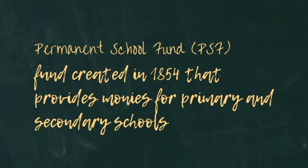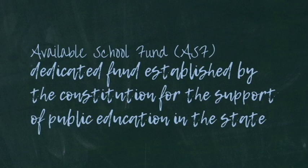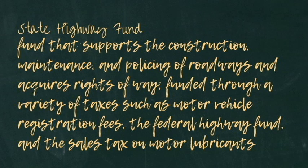The Permanent School Fund (PSF) was created in 1854 to provide money for primary and secondary schools. It is funded by the sale of certain public lands and managed by the State Board of Education, with land coming from the Constitution of 1876. The fund distributes money to school districts based on attendance and guarantees bonds issued by local school boards, enabling them to borrow at lower interest rates. The Available School Fund (ASF) is a dedicated fund established by the constitution for public education, fueled by the PSF and 25 percent of the state's motor fuels tax.